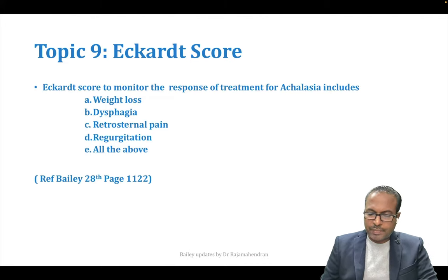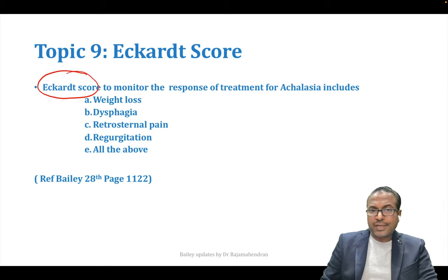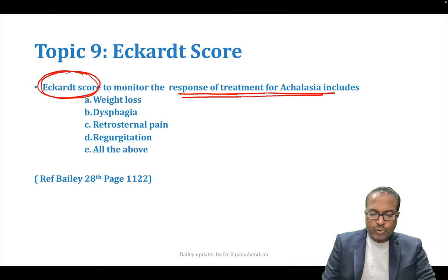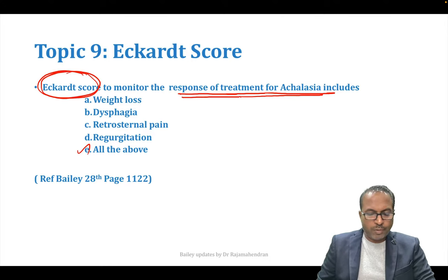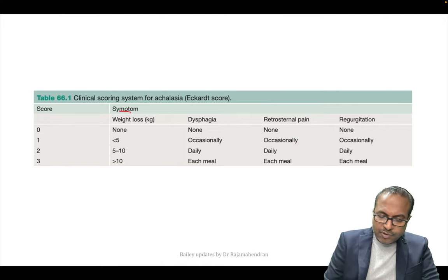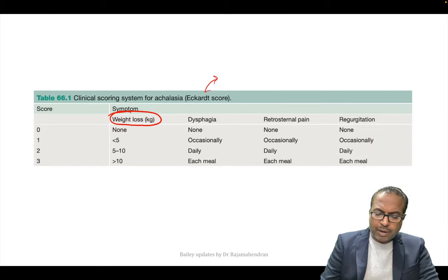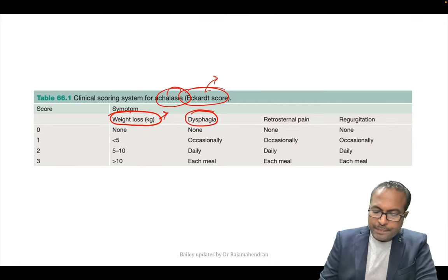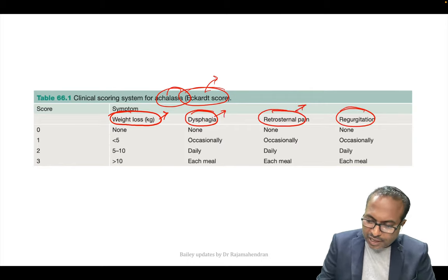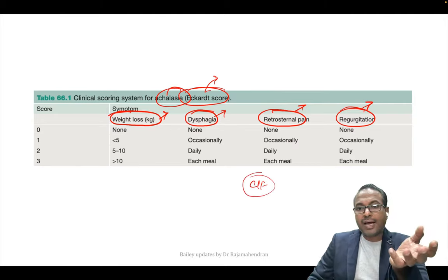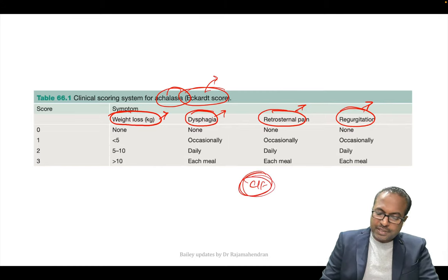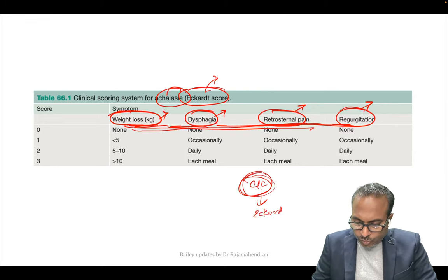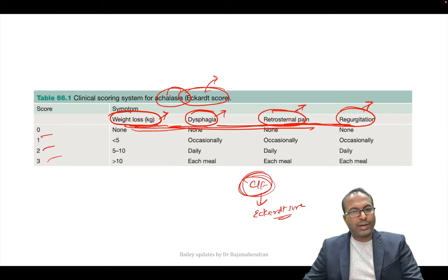Eckhart score is a post-treatment response score for achalasia. It assesses response to treatment — whether after surgery, balloon dilatation, or POEM. Eckhart score includes: weight loss, dysphagia, retrosternal pain, and regurgitation. These are all the clinical features of achalasia — if all are present, calculate the Eckhart score by assigning points 1, 2, 3 to each parameter.